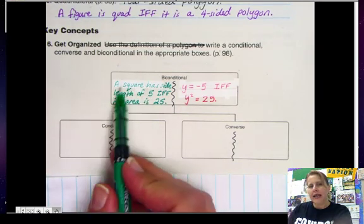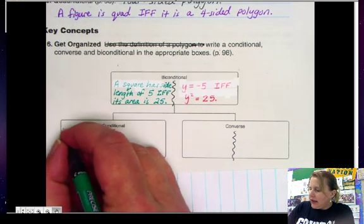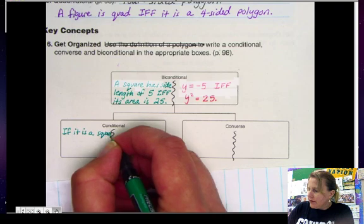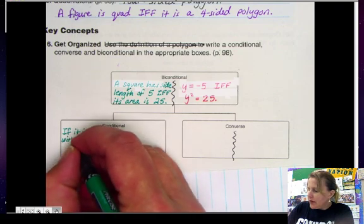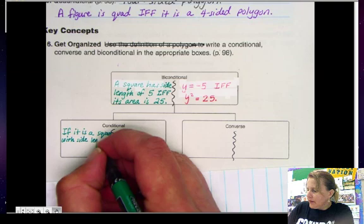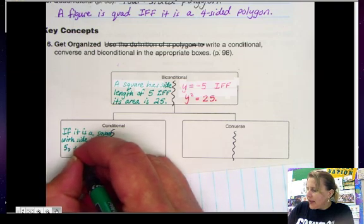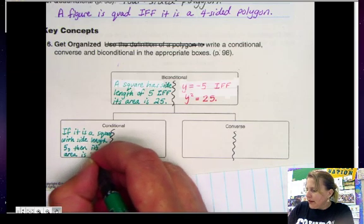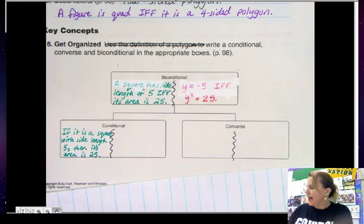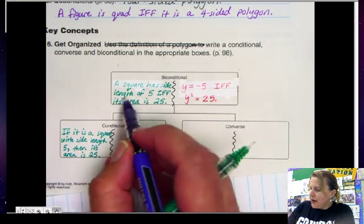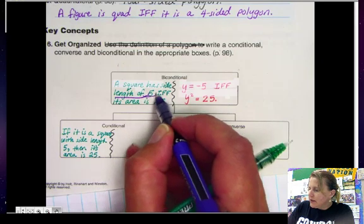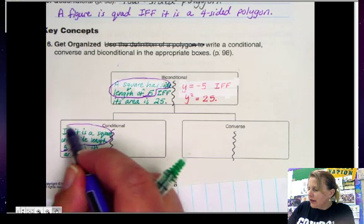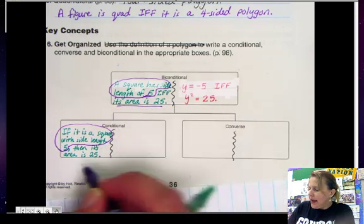So my conditional statement taken from this biconditional would be: if it is a square with side length 5, then its area is 25. You'll notice that I did the first part here as my hypothesis and the second part as my conclusion.